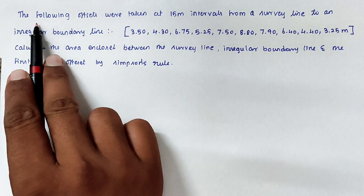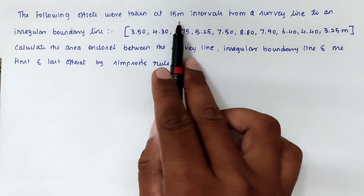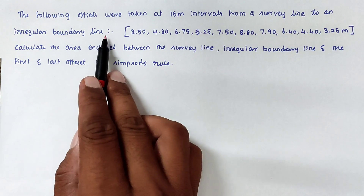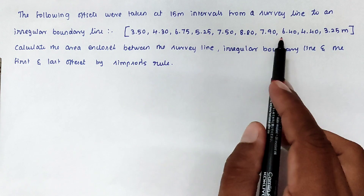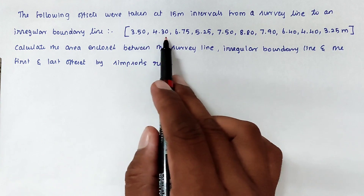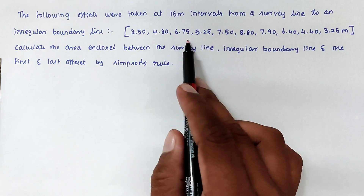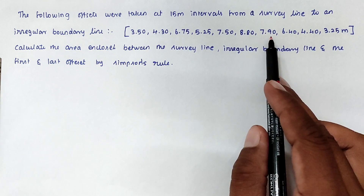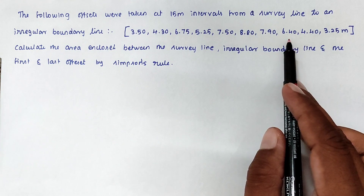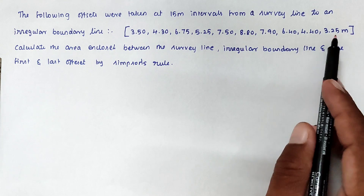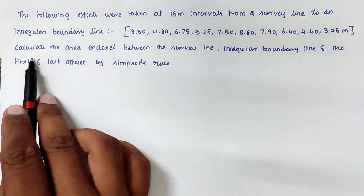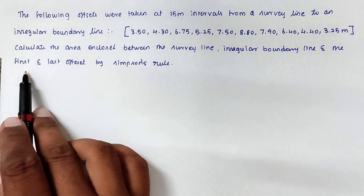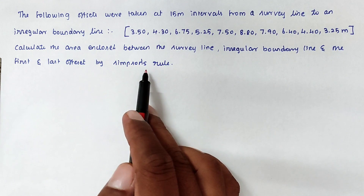The question is: the following offsets were taken at 15-meter intervals from a survey line to an irregular boundary line. The readings are: 3.50, 4.30, 6.75, 5.25, 7.50, 8.80, 7.90, 6.40, 4.40, 3.25 meters. Calculate the area enclosed between the survey line, the irregular boundary line, and the first and last offset by Simpson's rule.